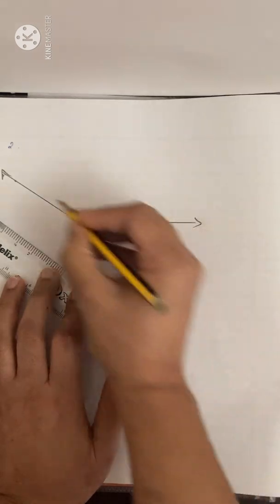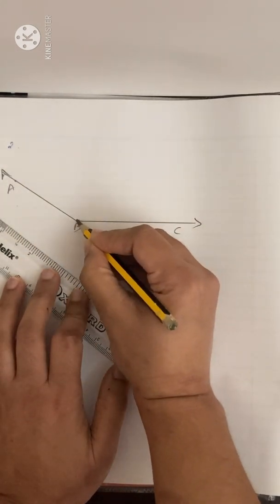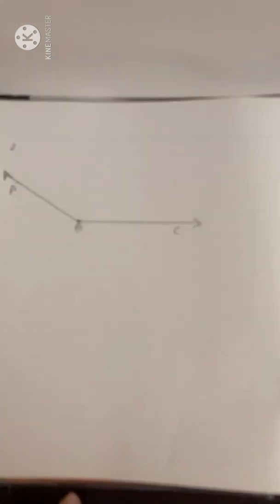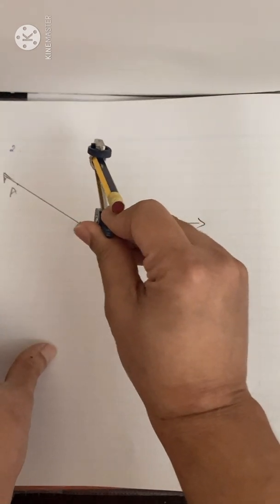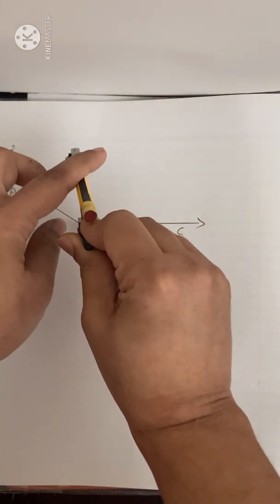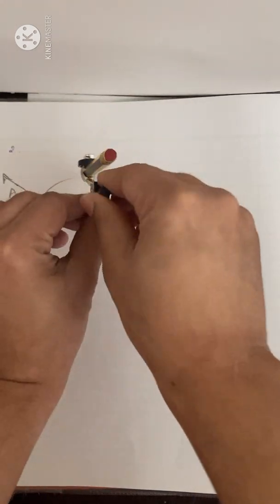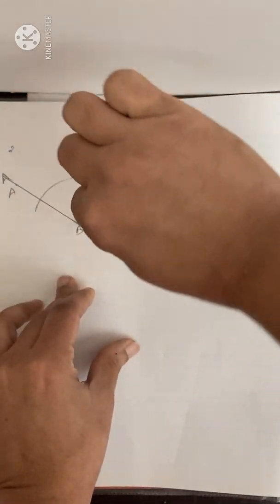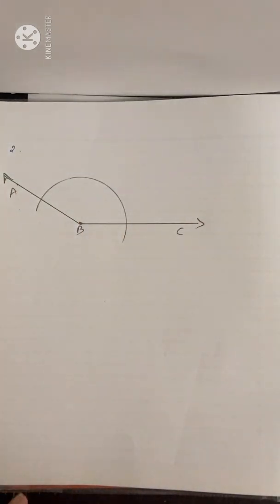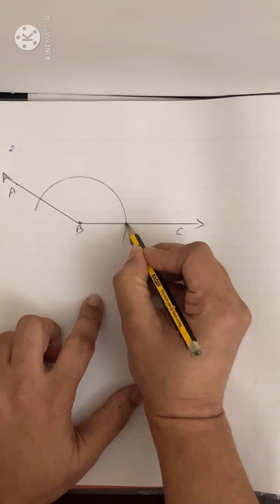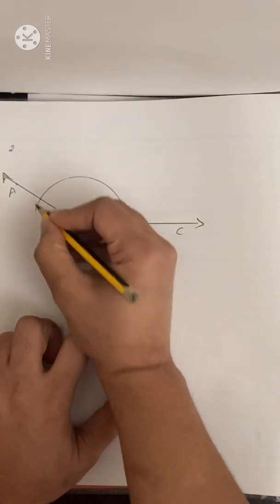You can name your angle ABC. For constructing its bisector, with B as center take a convenient radius and draw an arc such that it cuts the two arms of the angle — BC and AB. Let it cut at E and F.